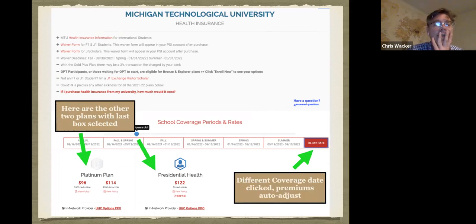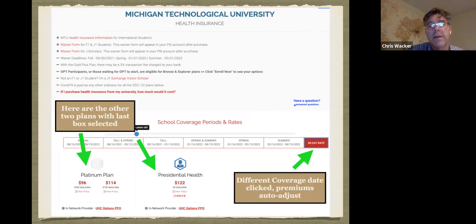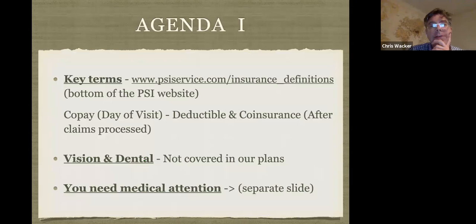We have five plans showing for MTU students. There are two additional plans visible when you click the 30-day rate box on the right, which turns red, and the premiums adjust accordingly. That's a general introduction to PSI and the website.